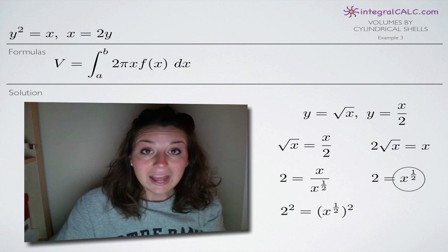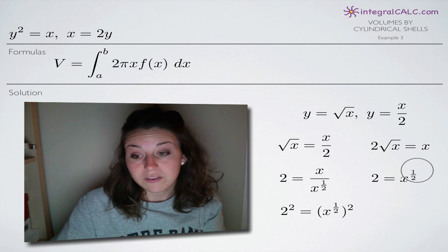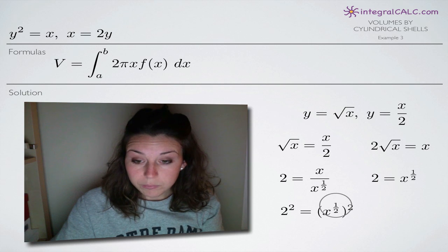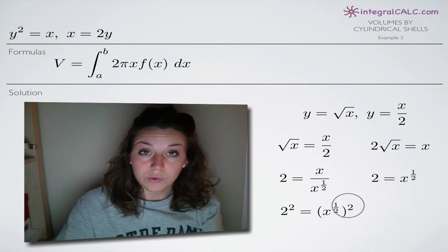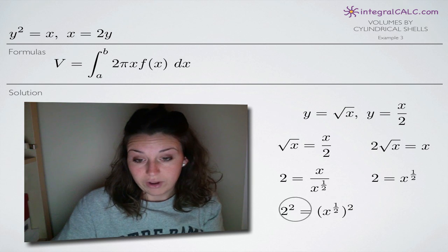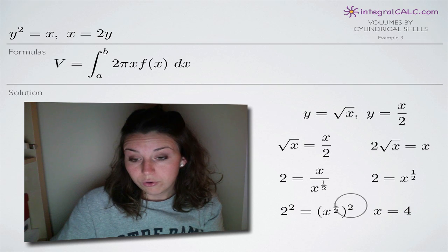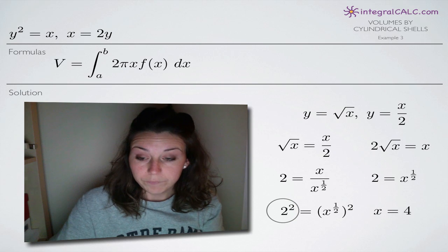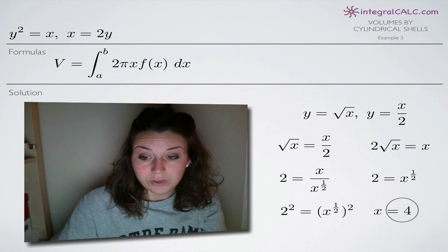Now we want to get x by itself, so we square both sides. Squaring x to the 1/2 multiplies the exponent by 2 — 1/2 times 2 equals 1 — leaving us with just x. On the other side, squaring 2 gives us 4. So we get x equals 4, the point at which our two functions intersect one another.